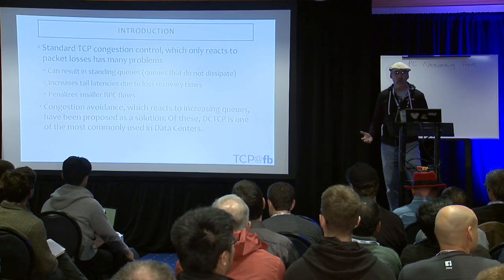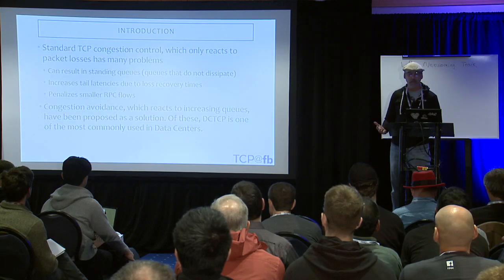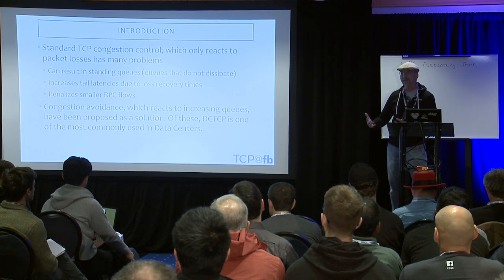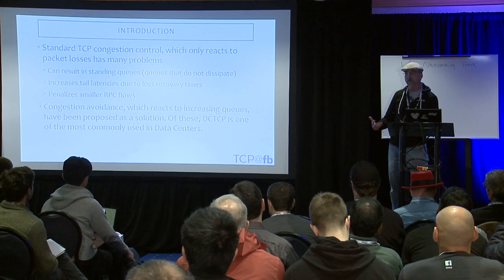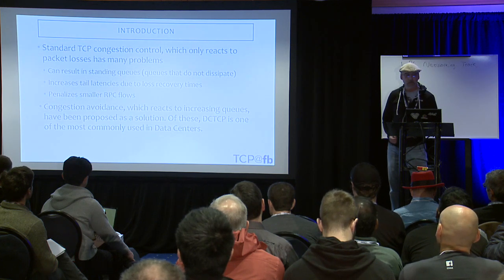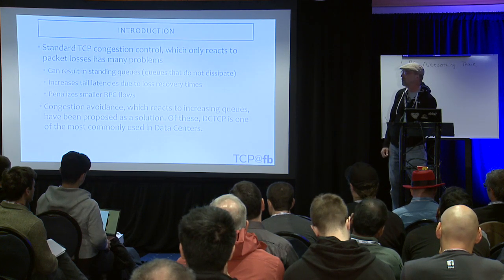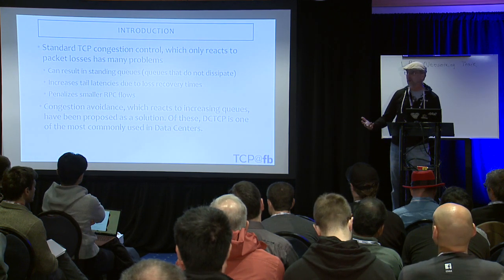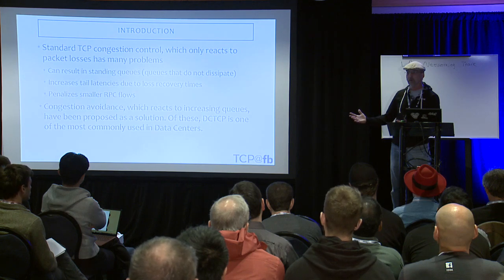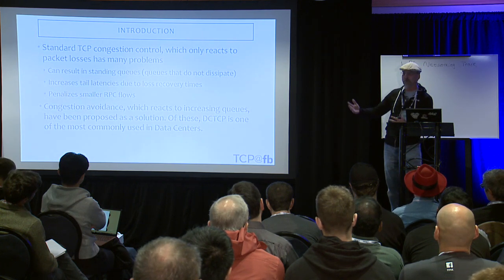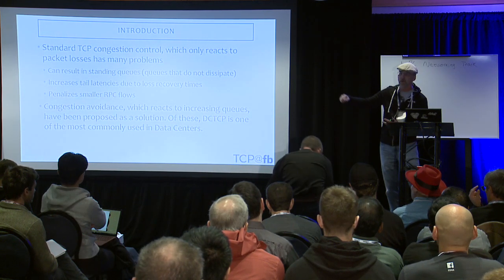Standard TCP congestion control, which only reacts to packet losses, has many problems. One of them is that it can result in standing queues — queues that do not dissipate — and this increases tail latencies. It can also increase tail latencies due to the time it takes to recover from losses. The only mechanism it has to know whether it's using all available bandwidth is to go over it, grow the queues until packets are dropped, and then slow down. That's why we have the standard zigzag behavior of TCP.